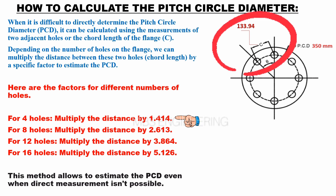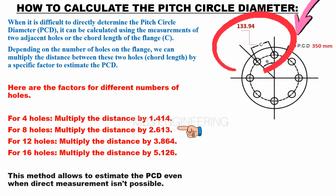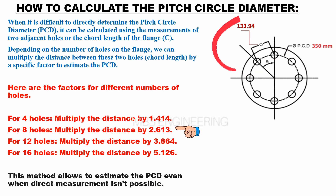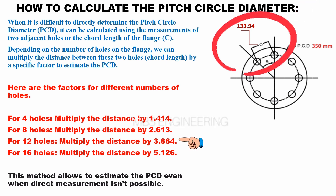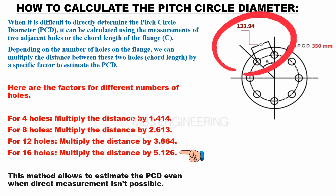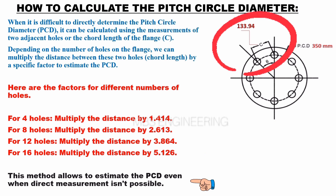Here are the factors for different numbers of holes: for four holes, multiply the chord length by 1.414; for eight holes, multiply the chord length by 2.613; for twelve holes, multiply the chord length by 3.864; for sixteen holes, multiply the chord length by 5.126. This method allows you to estimate the PCD even when direct measurement isn't possible.